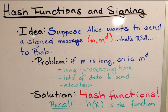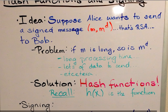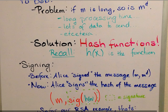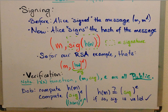As an example of when hash functions are used: hash functions are used in signing. Suppose Alice wants to send a signed message — m to the d, that's RSA — to Bob. The problem is that if the message m is long then so is m to the d, the signature. So if it's long it takes a lot of processing time, it's a lot of data to send, a lot of possible data to corrupt. It's just not ideal. The solution is to use hash functions, where h of x is the hash function. Before, Alice signed the message m directly by raising it to the power d — the decryption exponent which is private to Alice.